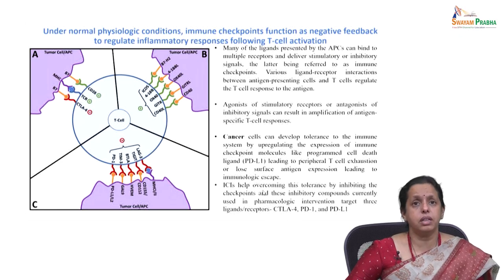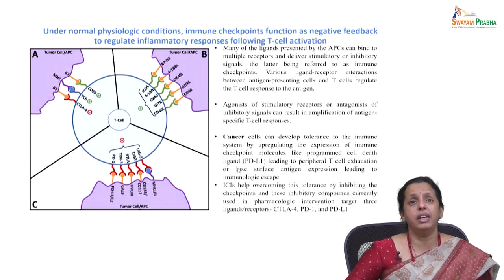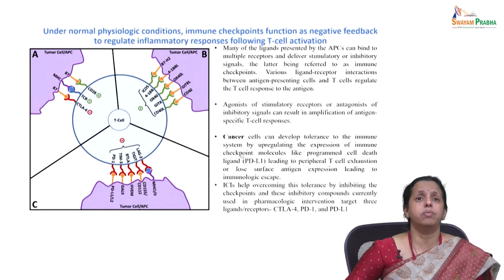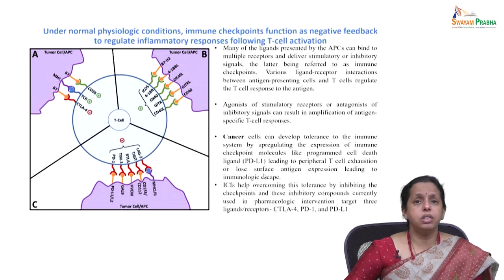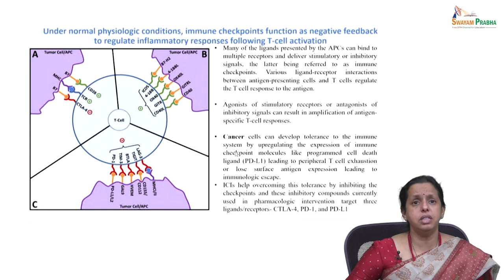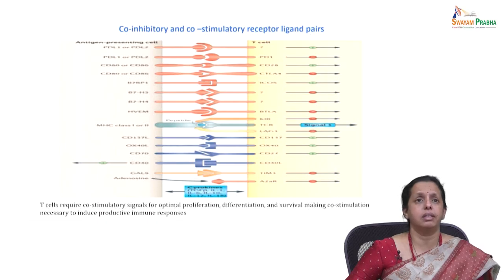Immune checkpoint inhibitors bind to anti-PD-L1. Monoclonal antibodies bind to this particular target. Currently, inhibitory compounds are used in pharmacological intervention using three different ligands, which will be discussed.